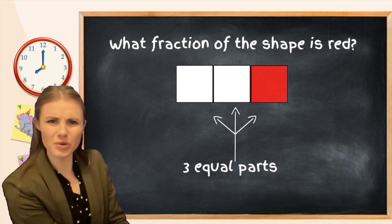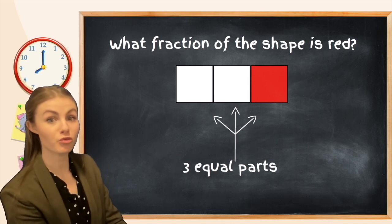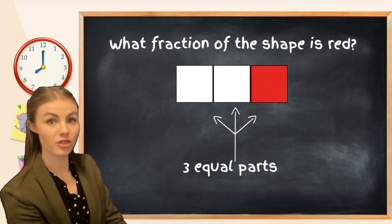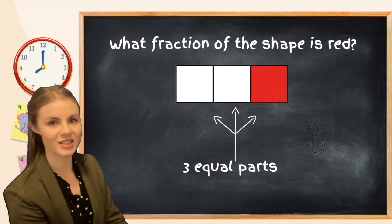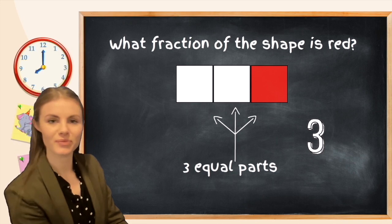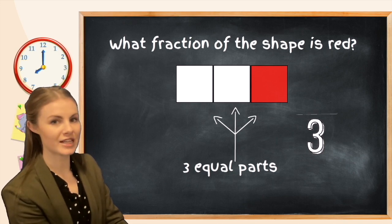So how do we write this as a fraction? Well, we know that there are three equal parts that make the whole, so that is our denominator. We need to show that some of it has been taken, that it is a fraction, so we're going to put that line in.